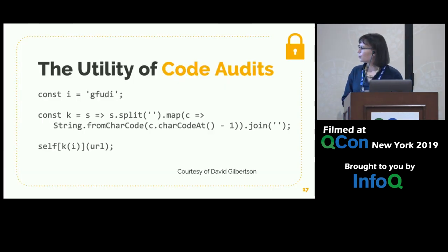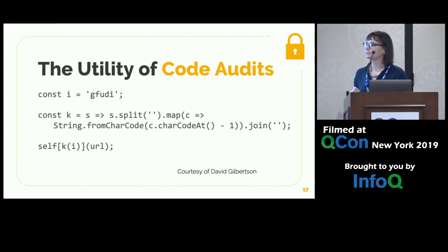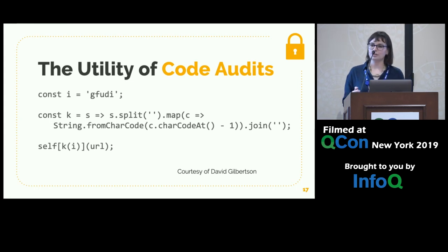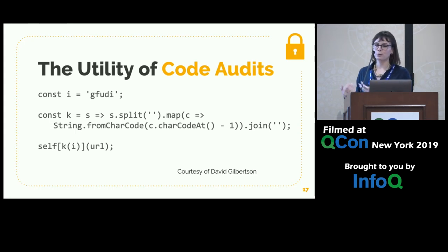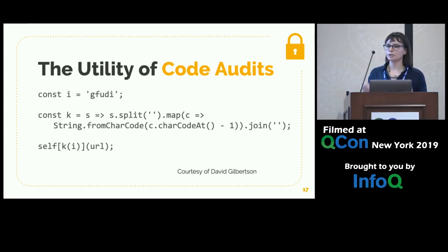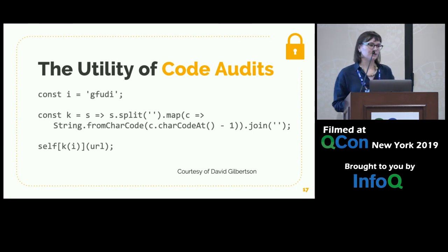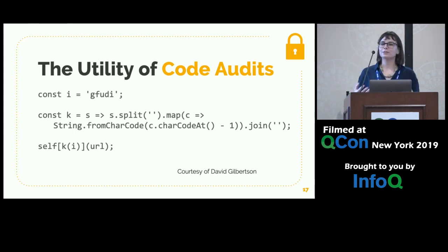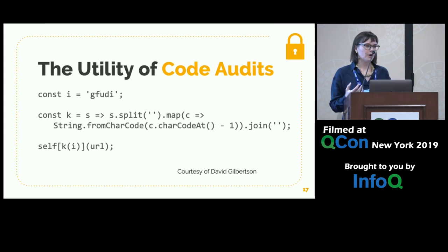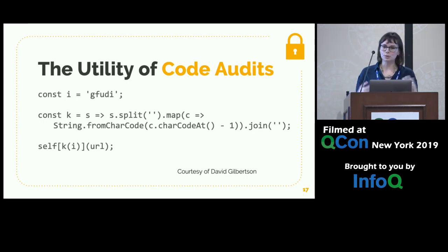Here's some code courtesy of David Gilbertson. What this code is actually doing is a fetch — a window.fetch — accessing the network. But if we were doing a code review, we'd probably never guess that. How it's able to do this: const i is actually 'fetch' shifted over one character. And 'self' is an alias for 'window'. So if we have thousands of dependencies and we're doing a code audit, we'd probably never find this.